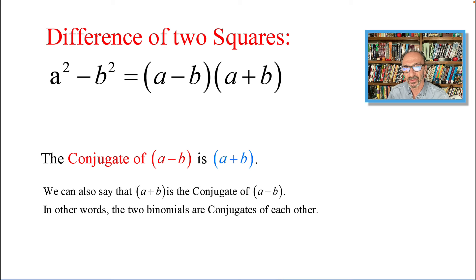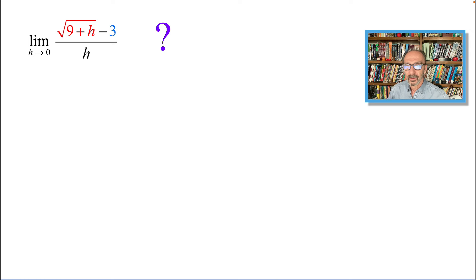And the conjugate of (a minus b) is (a plus b). We can also say that (a plus b) is the conjugate of (a minus b). In other words, the two binomials are conjugates of each other.